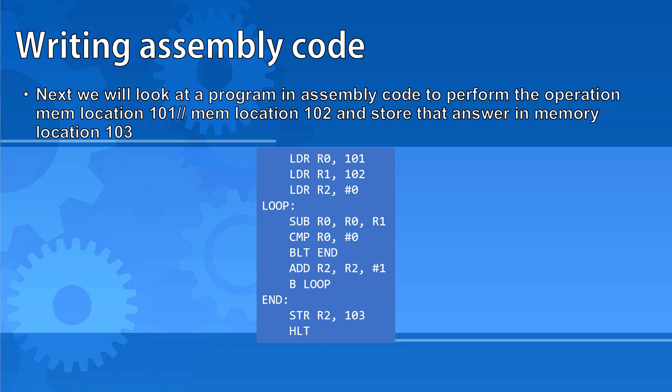And then we have our branch always back up to loop. We now subtract the number again, and we compare it with 0. If we're not less than 0, we add another one on to our number, and we keep going like this until eventually we are less than 0, we branch to the end, we output the value that's in R2, and the program stops.